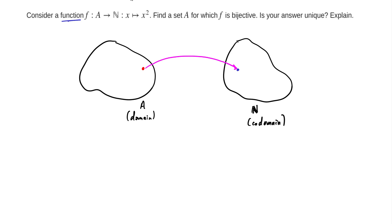Now what does it mean for a function to be bijective? Well, bijective means that this point over here in the codomain has only one arrow coming into it. So there's only one point from the domain that corresponds to that point in the codomain.